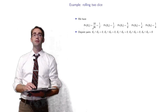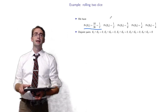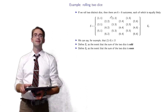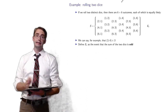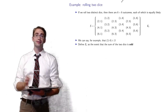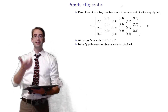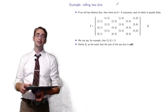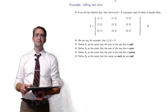The probability of E1 is 18 out of 36. E1 was the event that the sum of the two dice is odd — you count those outcomes, there are 18, and there are 36 total possibilities, so 18 on 36 is one half. Similarly for the other events.